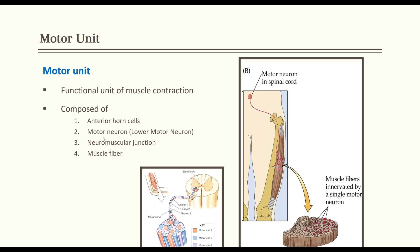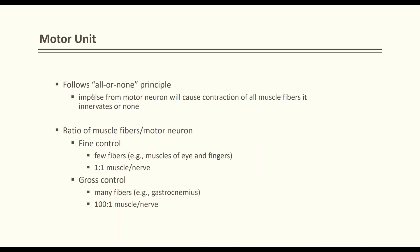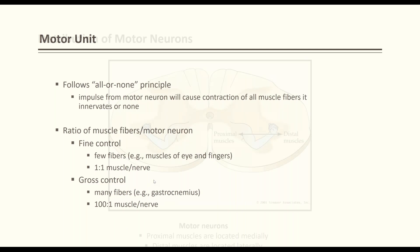Motor units are a common exam topic. A motor unit has four parts: the anterior horn cell in the spinal cord, the lower motor neuron, the neuromuscular junction, and the muscle fiber. Motor neurons follow all-or-none principles — they either fire or they don't. Fine motor control muscles have a near one-to-one muscle-to-nerve ratio, while gross movement muscles like trunk or quadriceps have ratios of one to five hundred. Precise fine control requires higher innervation density.